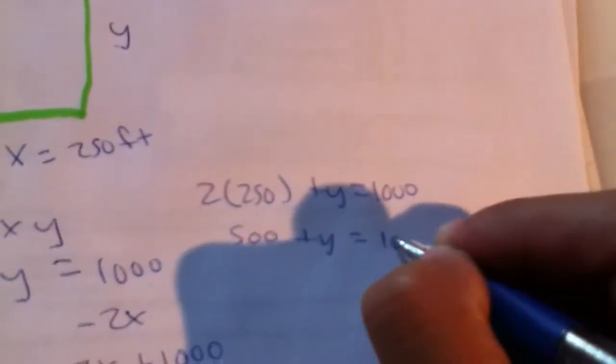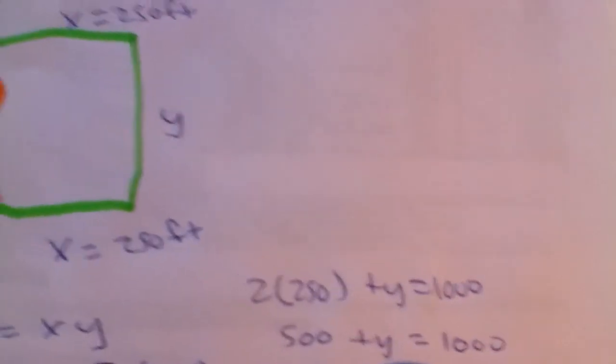2 times 250 is 500. Subtract 500. And we get y equals 500.